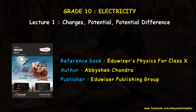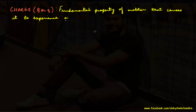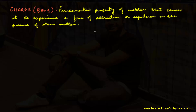In this video we'll discuss charges, potential, and potential difference. The source of all electricity is electric charge. It is defined as the fundamental property of matter that causes it to experience a force of attraction or repulsion in the presence of other matter. The SI unit of charge is coulomb, denoted by C.